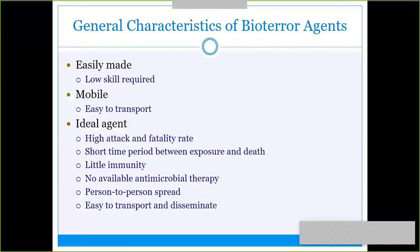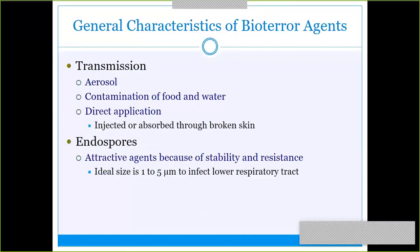What makes a good bioterrorism agent is that it's easily made — you don't need a lot of skill. It's mobile, easy to transport, and causes a huge impact with a good fatality rate. It's easily transmissible person to person and causes a lot of panic. Transmission modes include aerosolized, contaminating food and water, or direct application. Endospores are especially ideal because they can be aerosolized, are stable, and are easily inhaled.